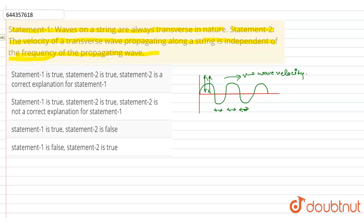So, it is also true, because we know that velocity of wave on a string is under root T by mu. This is wave velocity on a string. So, it is equal to under root T by mu, where T is tension in a string, and mu is mass per unit length.